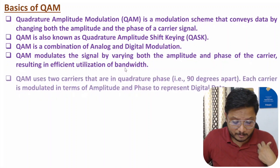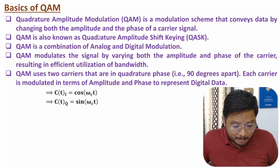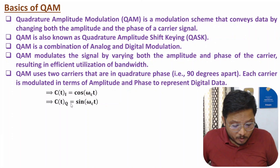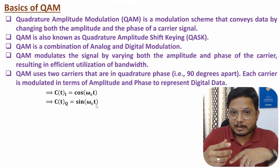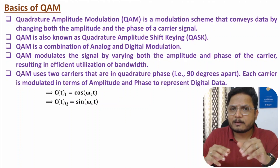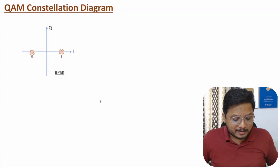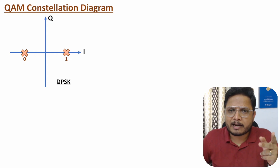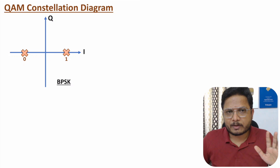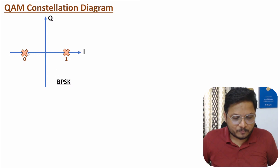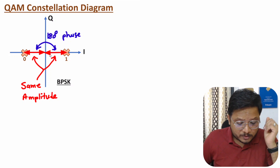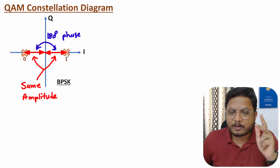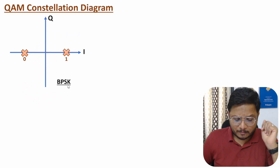QAM has two categories of carrier: in-phase carrier cos(ωc·t) and quadrature phase carrier sin(ωc·t). Let me explain this via the constellation diagram. In binary QAM, only two symbols are there — similar to binary PSK. With only two symbols, you don't need to change amplitude; simply by changing phase one can represent two symbols. So binary QAM is similar to binary PSK.